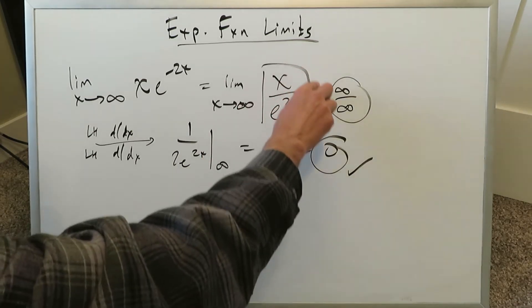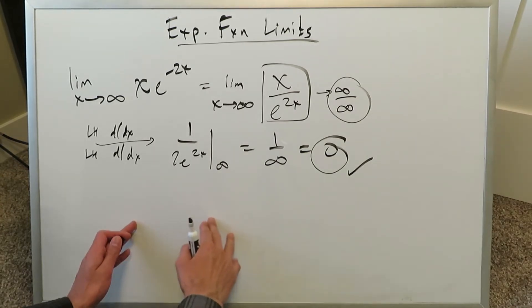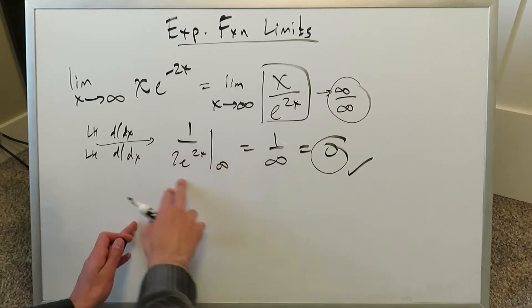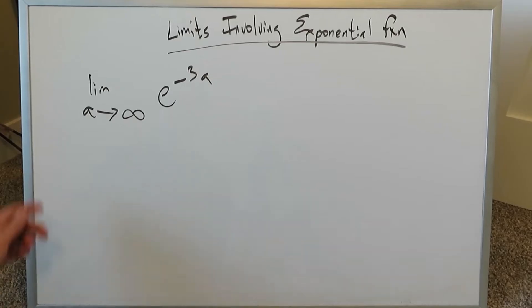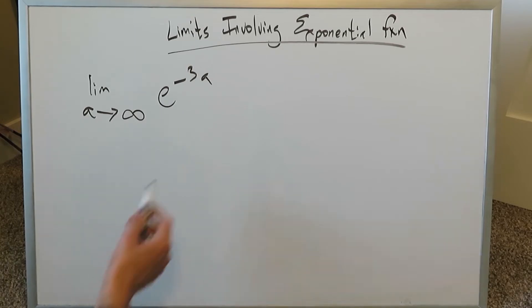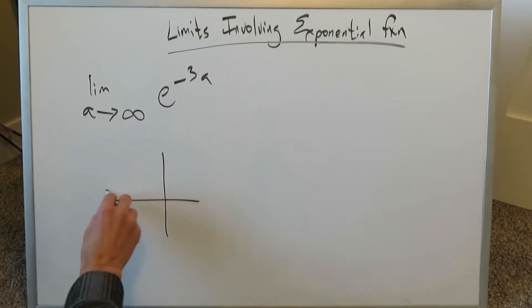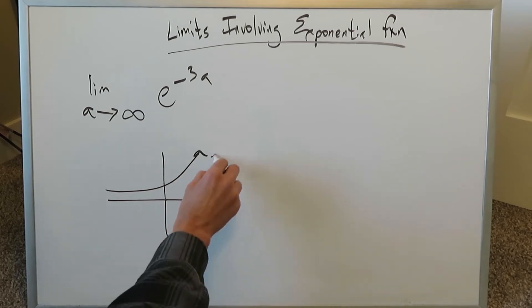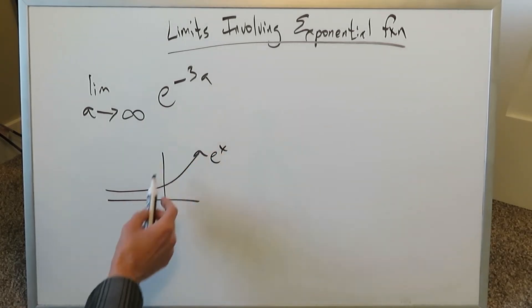Just by this algebraic manipulation, we were able to eliminate the indeterminate product form and go directly into the basic form we need. The next question is the limit as a approaches infinity of e to the minus 3a. It doesn't look like a hard question. Remember, e to the x is a standard exponential, but e to the minus x is a reflection of that across the y-axis.